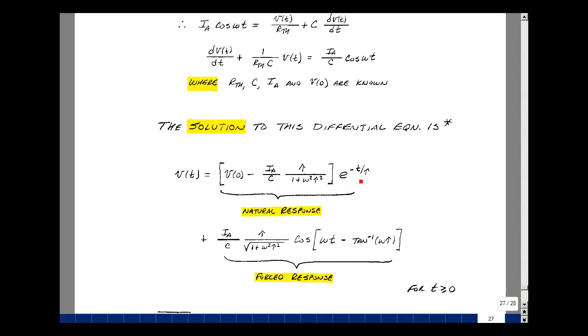As T approaches infinity, or five time constants, this term will vanish. And we call that our natural response, what the circuit wants to do naturally. And once this term drops out, we're left with the forced response, which is that we're getting a cosine function out for a cosine function in, with a change in amplitude and a change in angle.